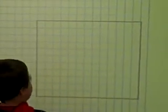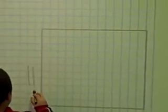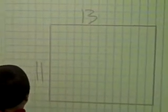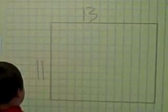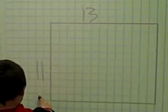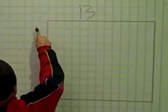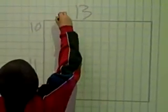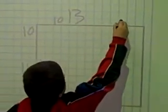First, I'm going to label my dimensions: 11 by 13. Then, I'm going to break them up so I can do it easier. I'm going to do 1 and 10, and I'm going to do 10 and 3.